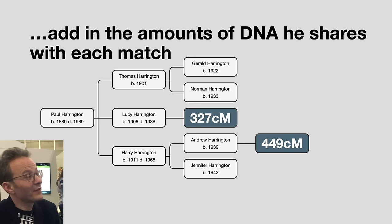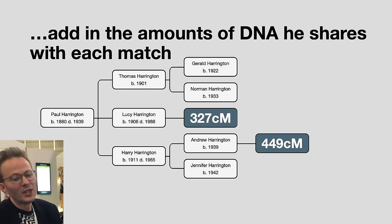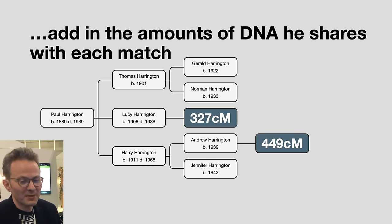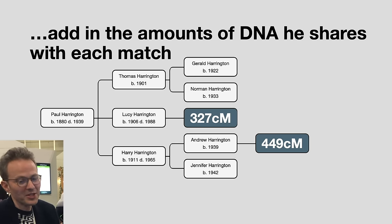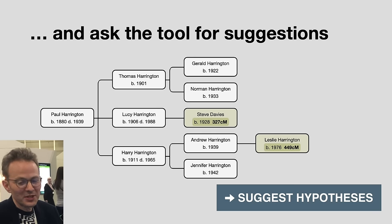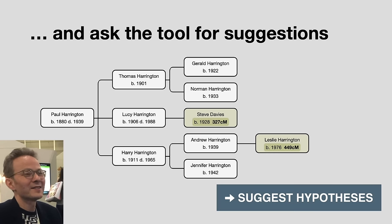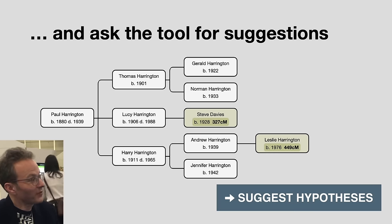Next, David needs to enter the number of centimorgans of DNA he shares with each match — this is key information for the tool. In this example, one match shares 327 centimorgans and another shares 449 centimorgans. He makes sure to add those to the right people.